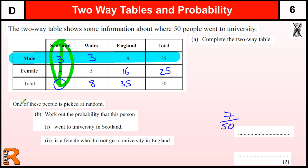Part two: one of these people is picked at random. Work out the probability that this is a female who did not go to university in England. Where are the females who didn't go to university in England? There are four females that went to Scotland and five females that went to Wales. So that's nine females out of the total, which is 50. You might think you should restrict it just to the females, so it'd be out of 25, but it says one of these people is picked at random from the whole table, so it's out of 50 — giving 9/50.